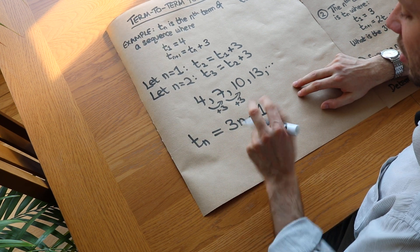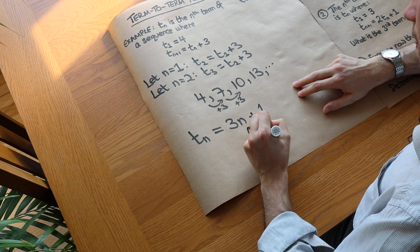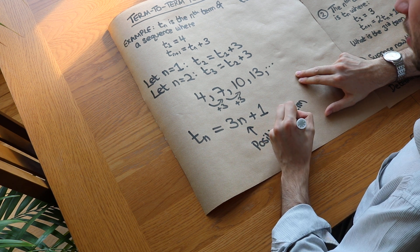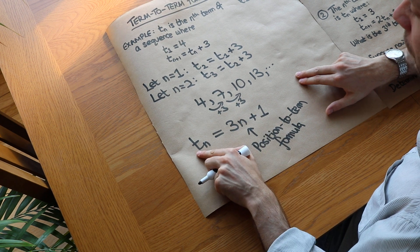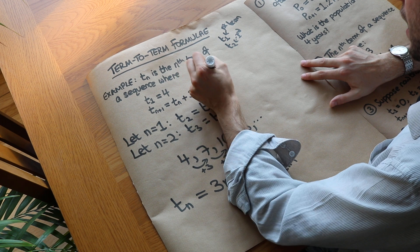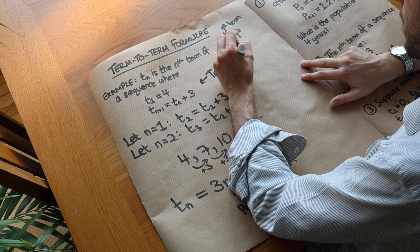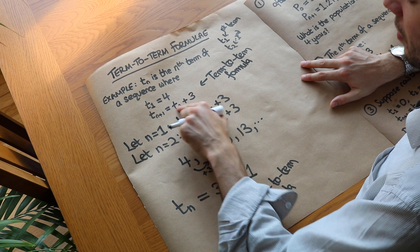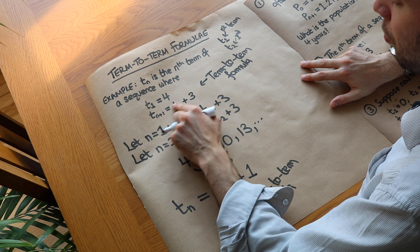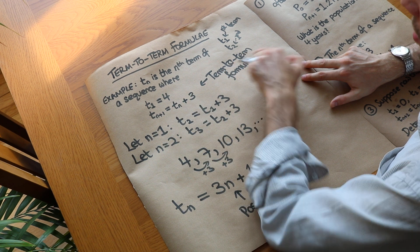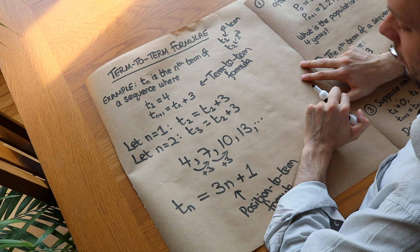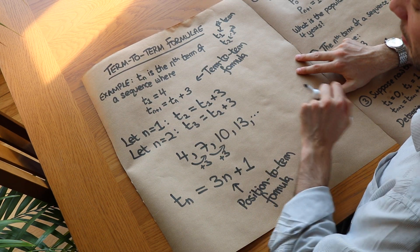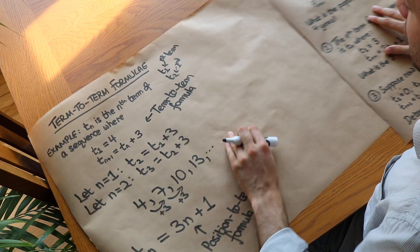This expression — tn equals three n plus one — is known as a position-to-term formula, because we're using the position n in the sequence to work out the term. Whereas the rule tn+1 = tn + 3 is known as a term-to-term formula, because each term is defined in terms of the previous term in the sequence. One uses the current position, the other uses the previous term to get the next one.